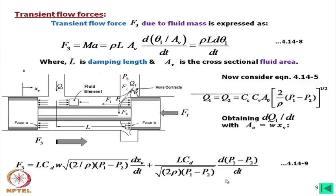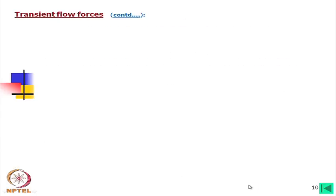Note that this expression is not correctly written in the Merits book. Careful derivation shows that substituting and differentiating correctly, F3 is obtained as shown. If you agree with the orifice equation and differentiate properly, you arrive at the correct F3 expression.